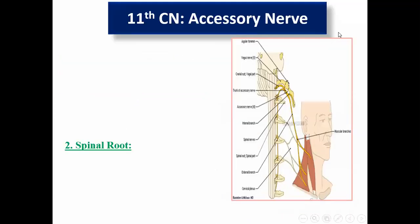Cranial nerve number 11 — alhamdulillah — is only a motor nerve. No sensory, no parasympathetic — only motor, supplying only muscles.